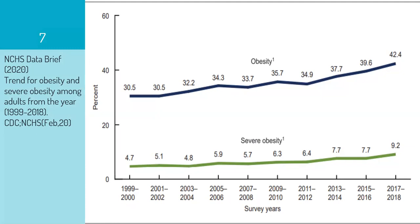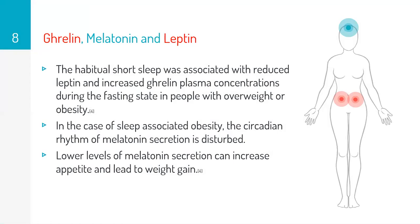While looking at the link between obesity and sleep, we have to consider three internal hormones: ghrelin, melatonin, and leptin. Ghrelin is the hunger hormone. Melatonin is a hormone related to sleep and tiredness. Leptin is a hormone that alerts our body when we are full. A decrease in sleep reduces leptin — meaning our body no longer notifies us when we are full — and increases ghrelin, which increases appetite and leads to weight gain. Disturbances in the circadian rhythm of melatonin cause lower melatonin production, which can also increase appetite and lead to weight gain.